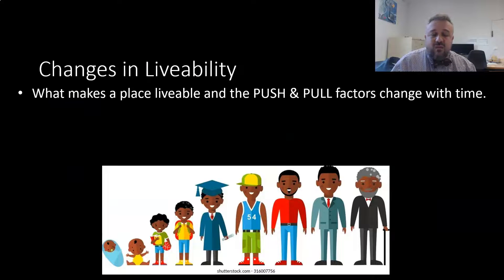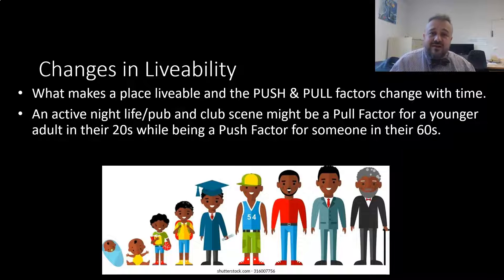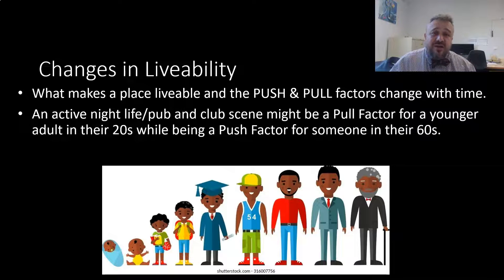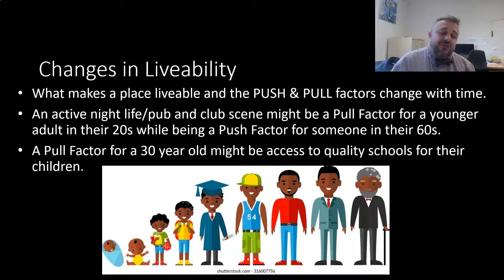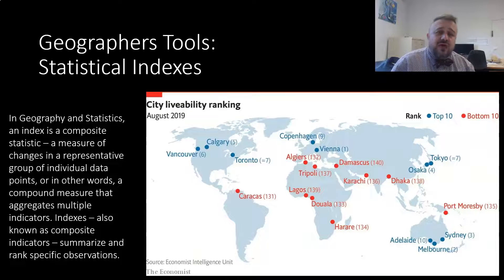For example, an active nightlife and pub scene might be a strong pull factor for someone single in their early 20s, but for someone in their 60s that same nightlife — people walking home making noise — might actually become a push factor. Similarly, access to quality schools is a pull factor for a 30-year-old with children, but it drives up house prices, making it a potential push factor for those without children or past that stage of life.